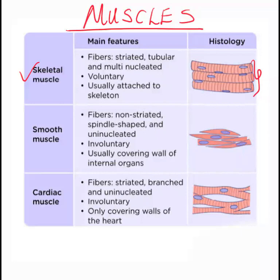Smooth muscles are involuntary, meaning they are not controlled by conscious thought. They usually cover the walls of internal organs like your stomach, and certain parts where substances enter and leave organs, like the opening of the stomach, the anus, and the rectum.